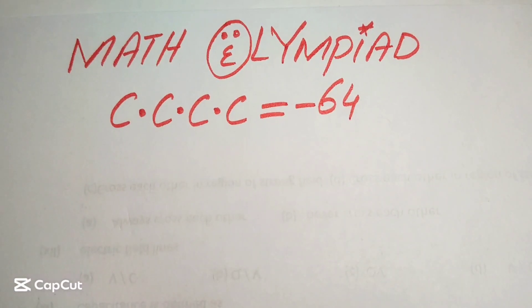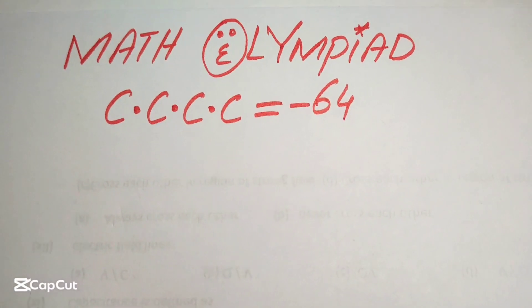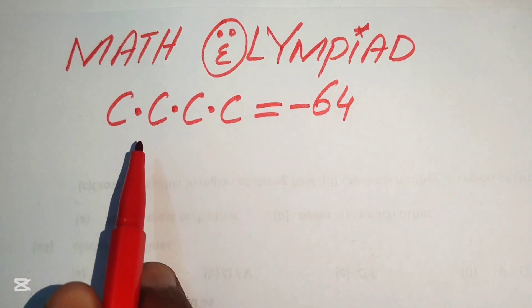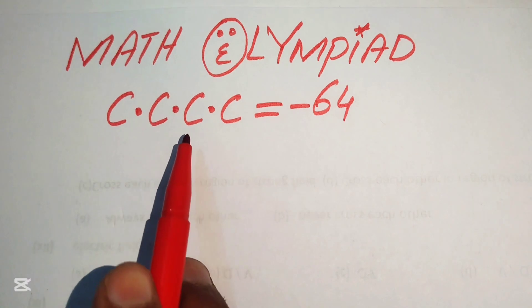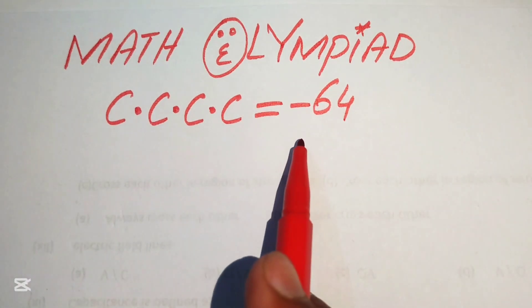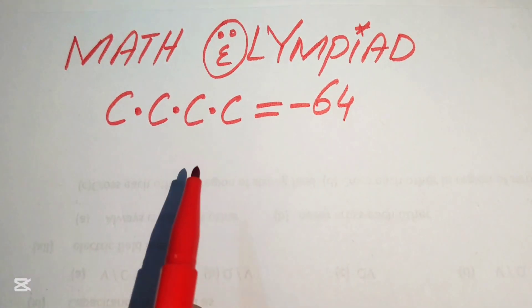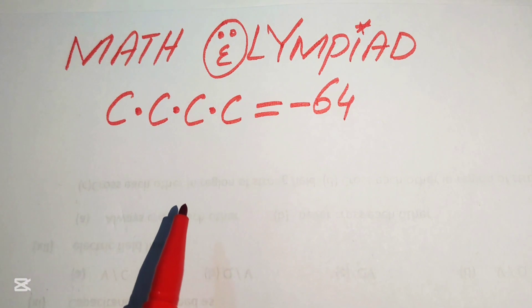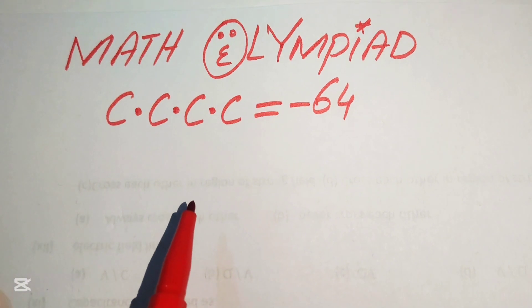Hello everyone, welcome to this nice algebra problem. Here we have c times c times c times c equals minus 64, and we need to find the value of c.